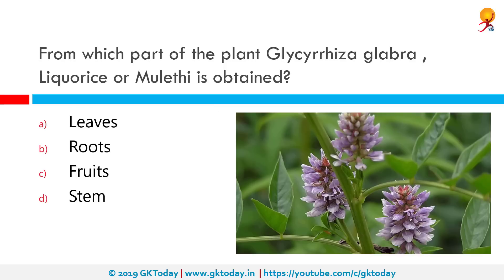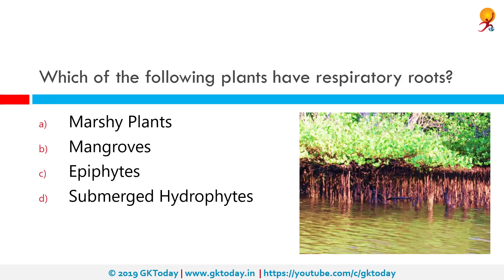From which part of the plant is Glycyrrhiza glabra — licorice or mulethi — obtained? It is obtained from the roots. Mulethi is a powerful licorice root mostly used in powder form and is an effective expectorant used since ancient times in Ayurvedic medicine. It is also used in Jashti Madhu, which is a tooth powder. Many cough syrups today contain licorice as an ingredient, and it is also used in treating mouth ulcers and peptic ulcers.